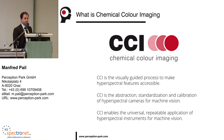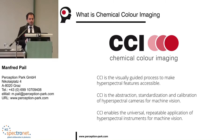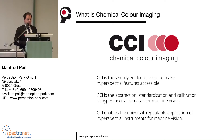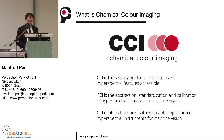But what is chemical color imaging? Chemical color imaging is the visually guided process to make hyperspectral features accessible. It is the abstraction, standardization and calibration of hyperspectral cameras for machine vision, and it enables the universal repeatable application of hyperspectral instruments for machine vision.